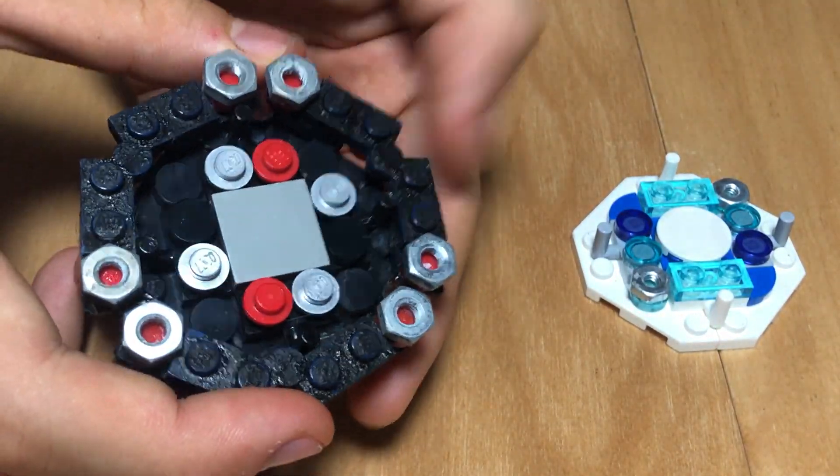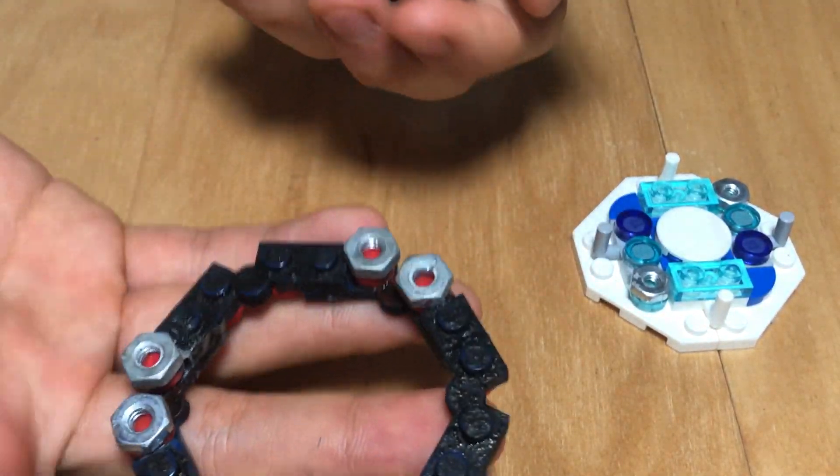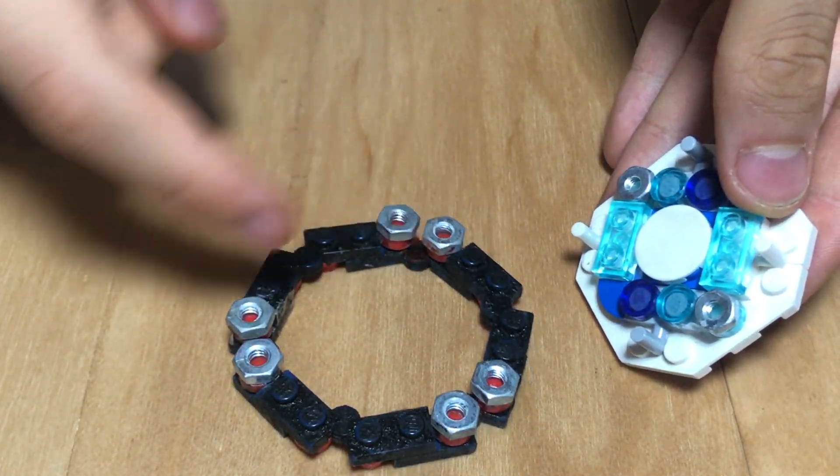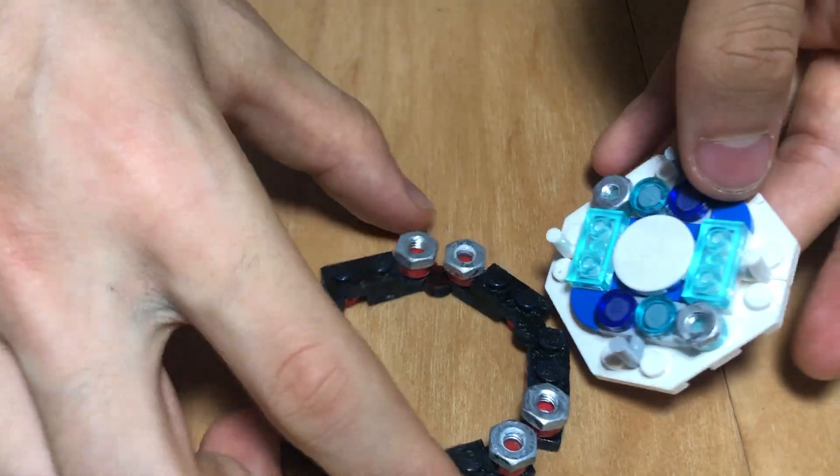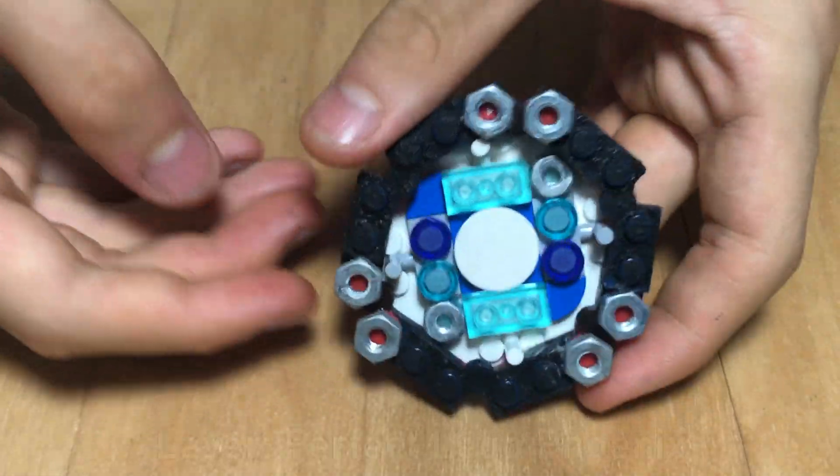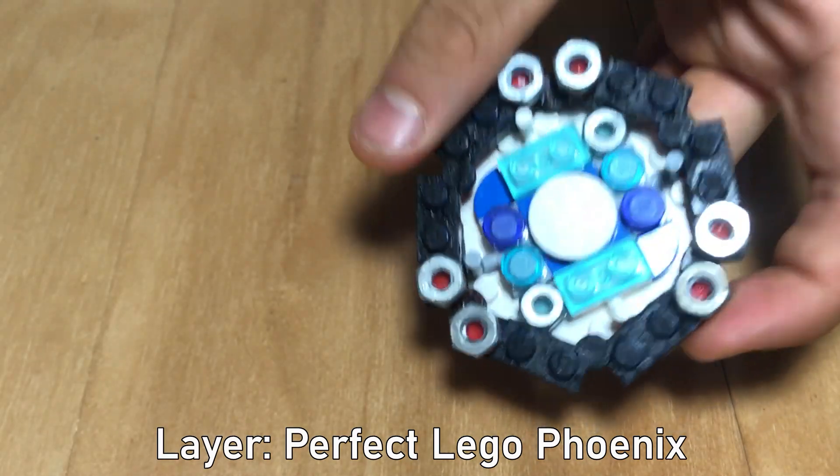And next, we're going to steal a part from LEGO Phoenix Dash, namely, the ring. I mean, seriously, for just a layer, you get 1, 2, 3, 4, 5, 6, 7, 8 metal nuts. And when putting them together, they make an insanely heavy combo, just like Perfect Phoenix.